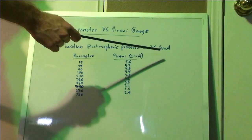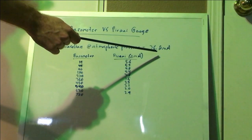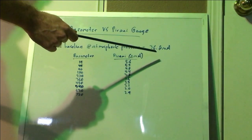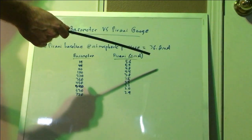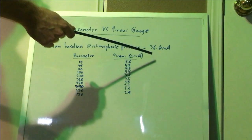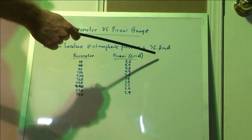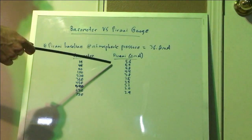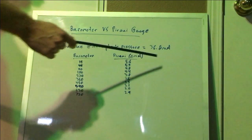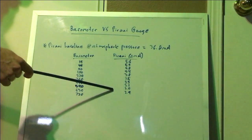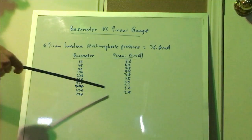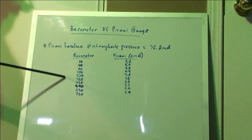Because remember, the Pirani gauge ultimately works based on heat. The amount of gas surrounding the filament affects how hot it is, which affects the resistance, which affects the current draw. So ambient temperature will change this number. It will change all the readings that you get, so you need to take this baseline first and then record the offset, record how much that number drops, and use that to reach your pressure.